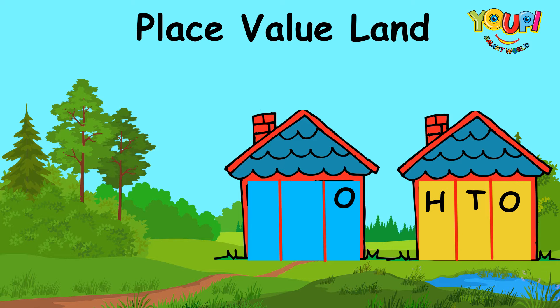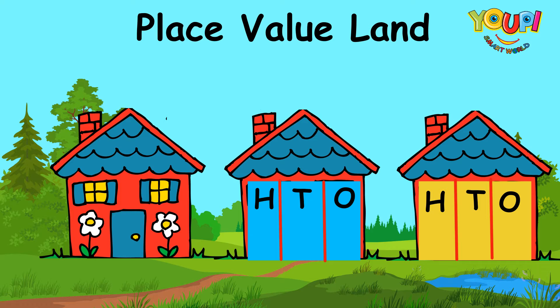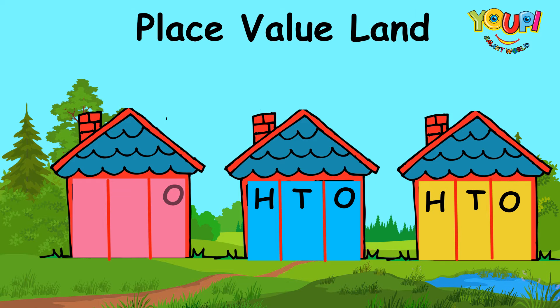The children played outside all the time. Then another family moved into Place Value Land. They had three children as well. Their names were One, Ten, and Hundred. The children loved playing together.